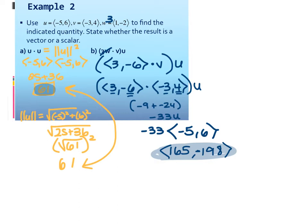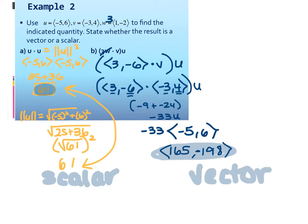Now the second part says state whether the result is a vector or a scalar. A scalar is a single number; a vector is in component form. So is A a scalar or a vector? Scalar. Is B a scalar or a vector? Vector. Scalar means single number — could be positive, negative, or a fraction, as long as it's a real number. A vector is in component form or linear IJ form.